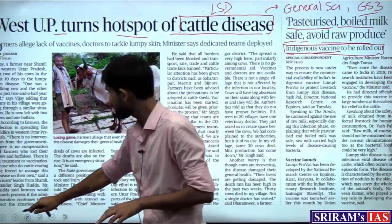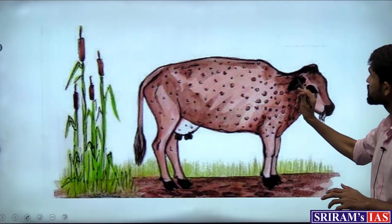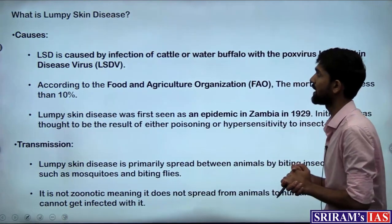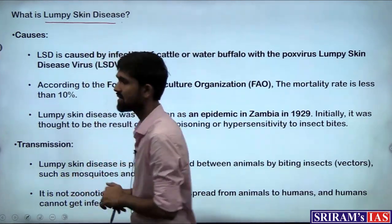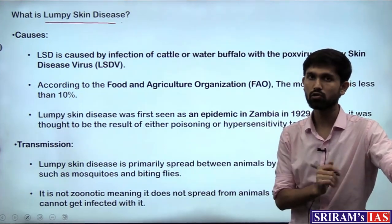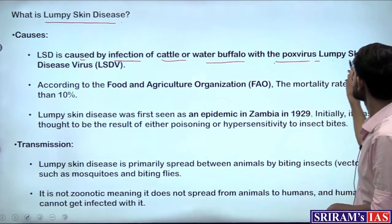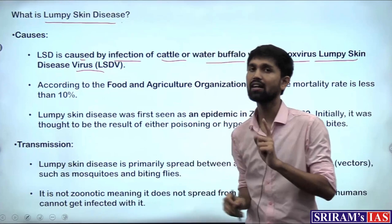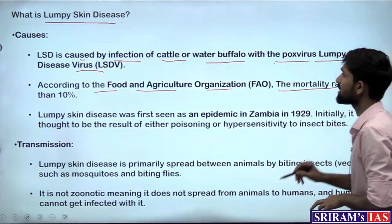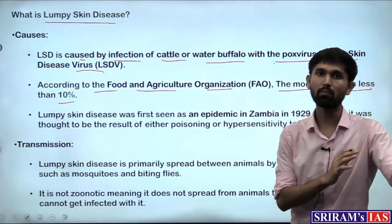What is the lumpy skin disease which appears in cattle? The cattle generally develop lumps on the skin, accompanied by high fever and other problems. This is a viral disease caused by infection of cattle or water buffalo with the pox virus — the lumpy skin disease virus. According to the Food and Agriculture Organization, the mortality rate is less than 10%, though a large number of deaths have been seen.